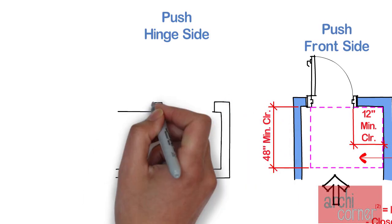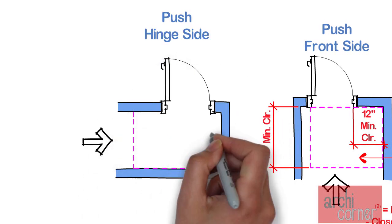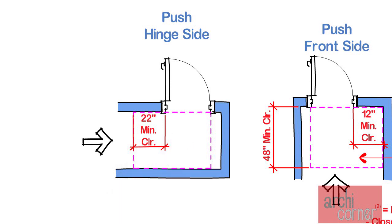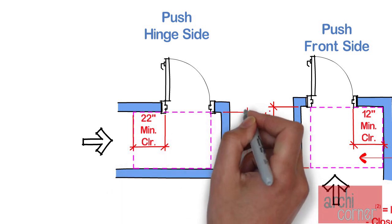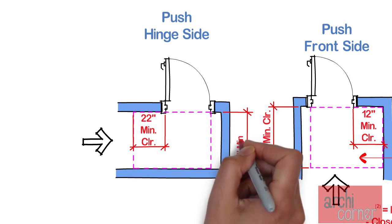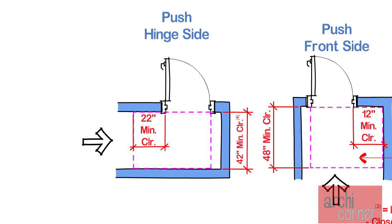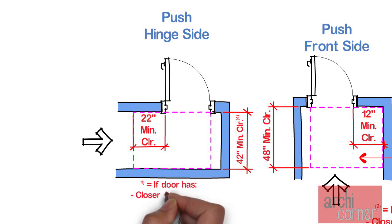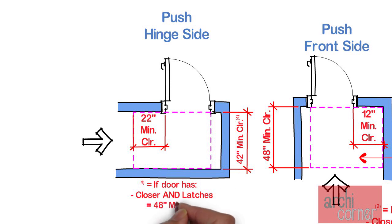Now last, when approaching from the hinge side on the push side, parallel to the doorway beyond the hinge side, there has to be 22 inches minimum clear. Perpendicular to the doorway, the door must have 42 inches minimum clear. However, there is one exception: if the door is provided with both a closer and a latch, then the door must have 48 inches minimum clear perpendicular to the doorway.